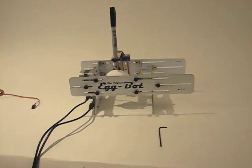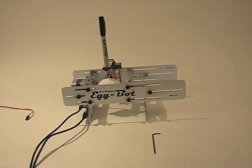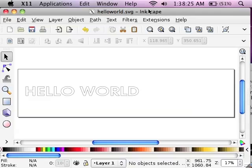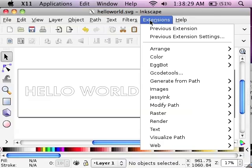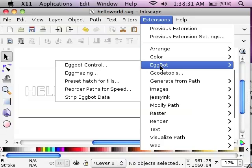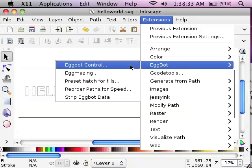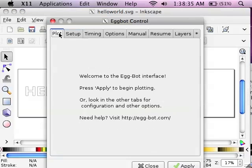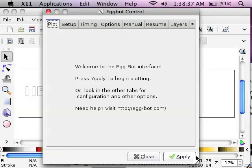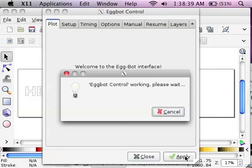Now I go back to my Inkscape here. And I've opened this file, HelloWorld.svg. It's one of our example files. From our Extensions menu, I select Eggbot, Eggbot Control. I'm just going to go to the Plot tab, hit Apply, and let's see what happens.